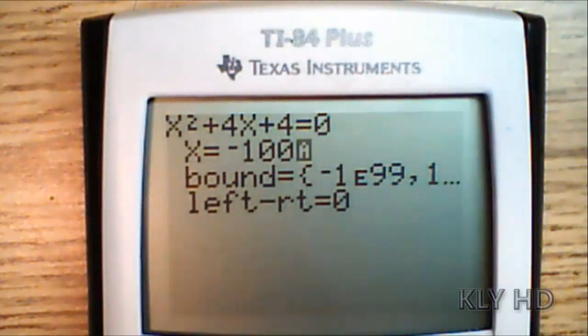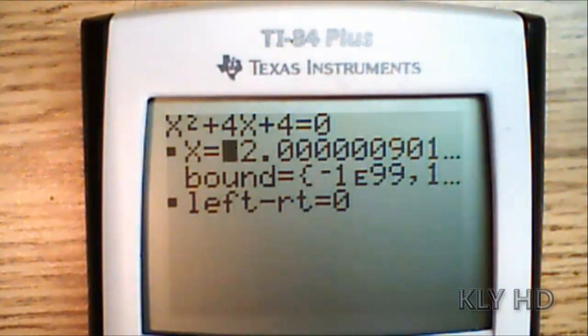To find the second root, use a randomly low number, negative 100. As you can see, it will show you that x equals negative 2.